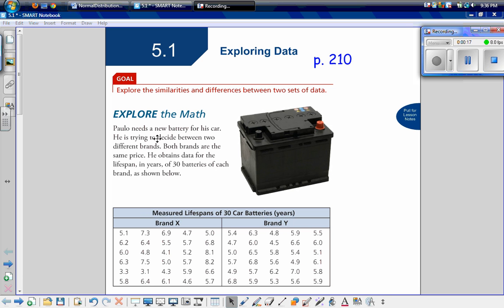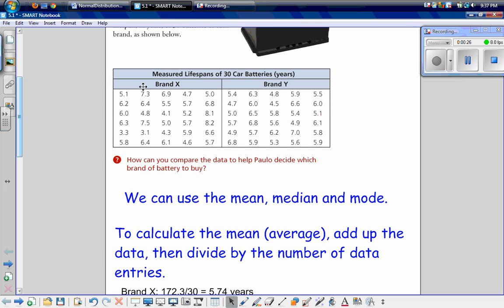Paulo needs a new battery for his car. He's trying to decide between two different brands, and both brands are the same price. So he obtains data for the lifespan in years of 30 batteries of each brand as shown below. We have our two brands, brand X and brand Y, and here we have their lifespans in years for the data he's collected. So now how can we compare the data to help him decide which brand of battery to buy?